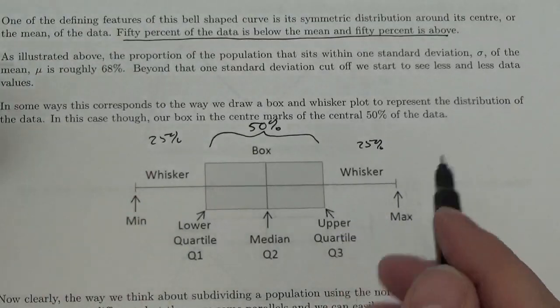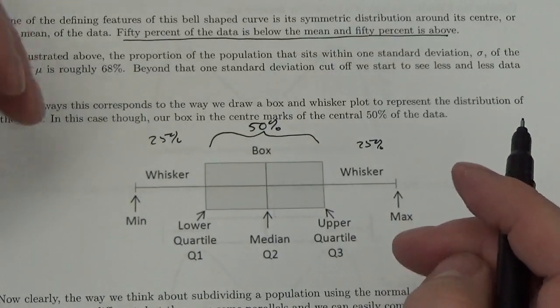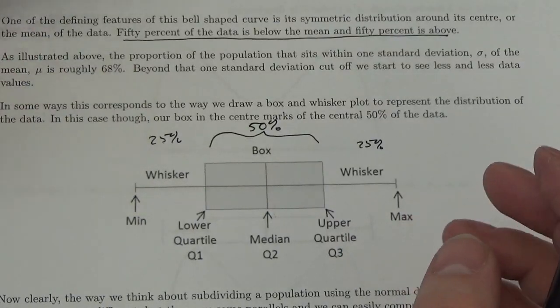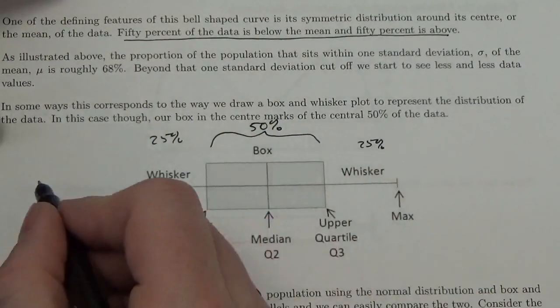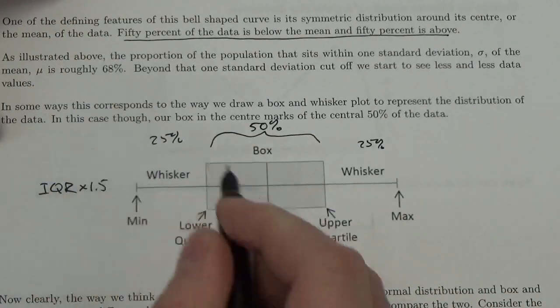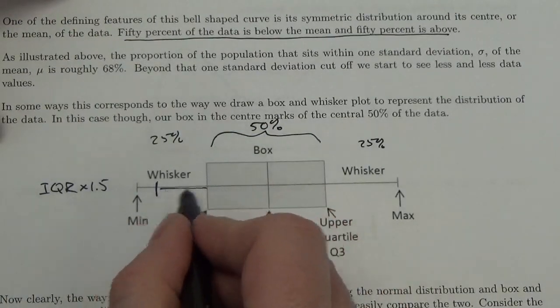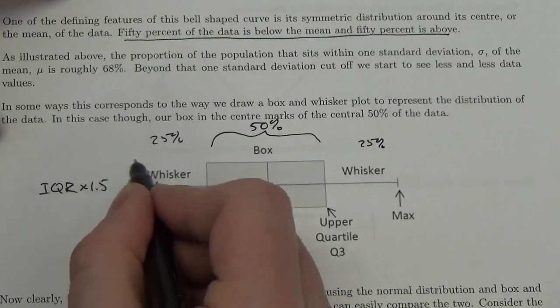But then what we do is we introduce that little bit of a boundary that we used for looking for outliers. So, we get the interquartile range. And remember, we multiply this by 1.5. And if we come back that amount here, then these are your outliers.